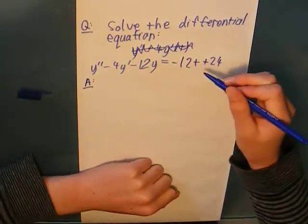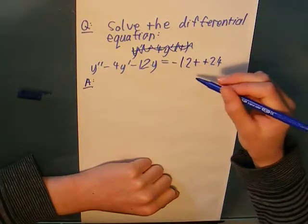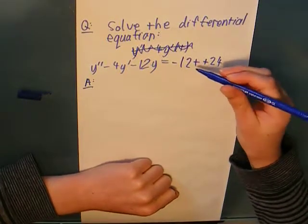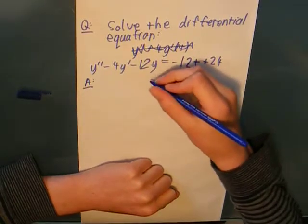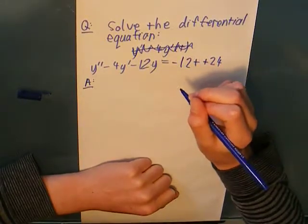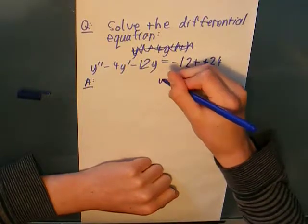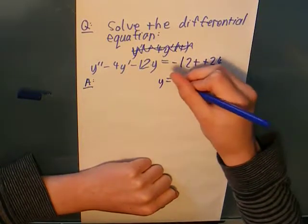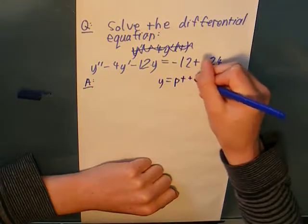So firstly, this time, our trial solution is going to be of the form of what's on the right-hand side, that is a linear function. So I've got the trial function, it's going to be y equals pt plus q.